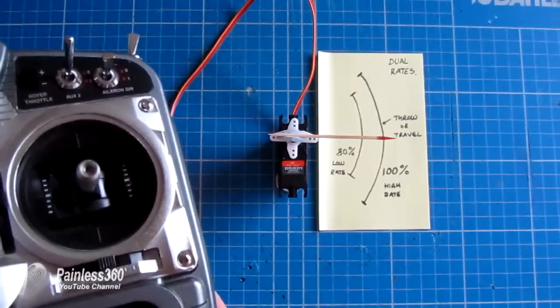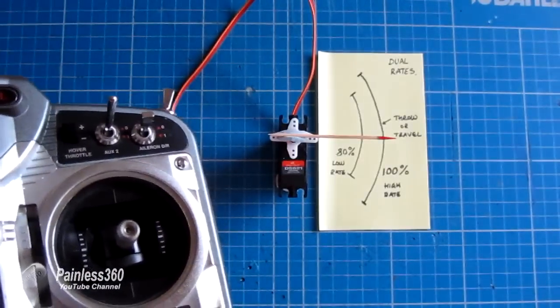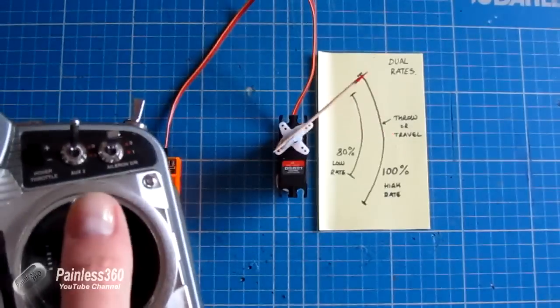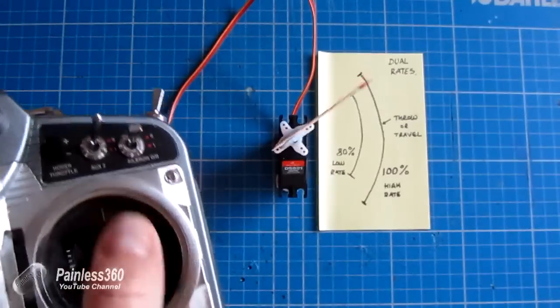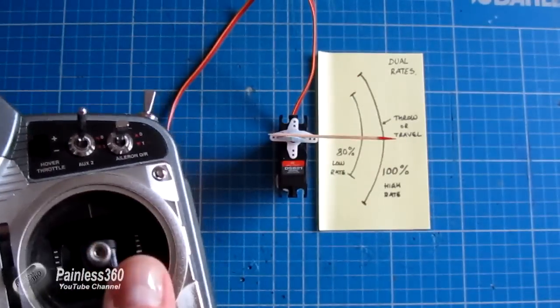But then when you want to go crazy and do 3D in aerobatics, you flick the switch so you're going to a hundred percent, and now you have the full range of travel, so you get more aggressive stick response.